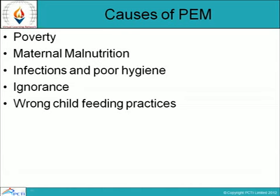PEM occurs in poor Indian communities. It is commonly seen in families of landless agricultural laborers and tribal communities without any regular earnings, among others.